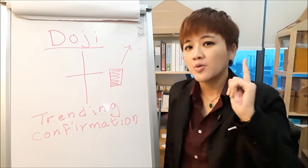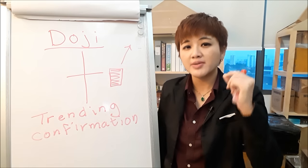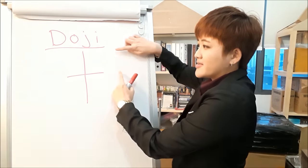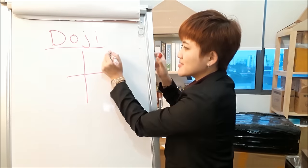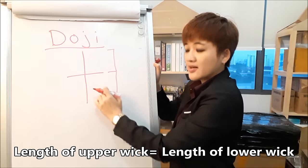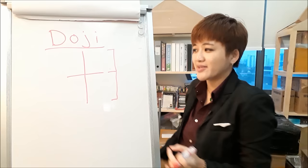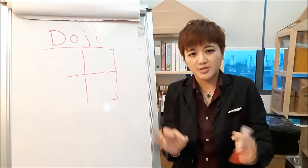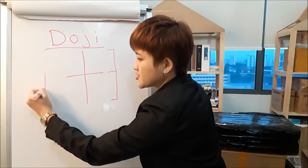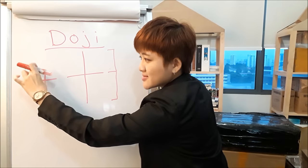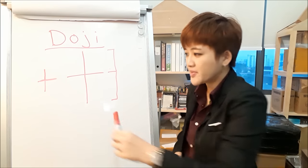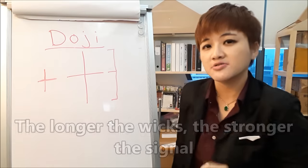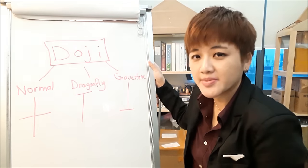For an ideal doji, the upper wick should be about the same length as the lower wick — you don't need a ruler, just estimate visually. And if you compare two dojis of the same proportions, the one with longer wicks is stronger because the longer the wicks, the stronger the signal.